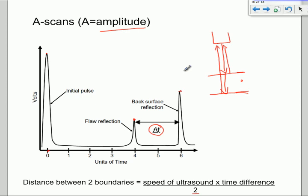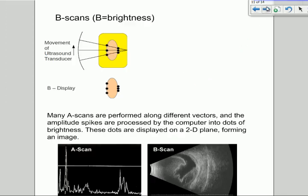Now amplitude scans are useful because they give us information about the distances between different boundaries inside the body. But they don't actually give us a picture that we can interpret. So in order to do that, what we need is a B scan. Now a B scan, instead of giving you amplitude spikes like this, gives you dots of brightness on a 2D planar image.